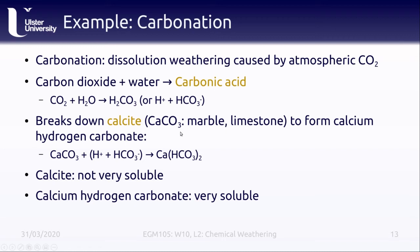Carbonic acid breaks down calcite, CaCO₃ — the main mineral found in rocks like marble or limestone — forming calcium hydrogen carbonate. Calcite is not very soluble in water, but calcium hydrogen carbonate is very soluble in water. So this dissolution of atmospheric carbon dioxide in water helps set the stage for further dissolution weathering, even by water that doesn't have as much carbonic acid in it.